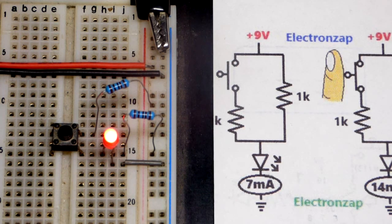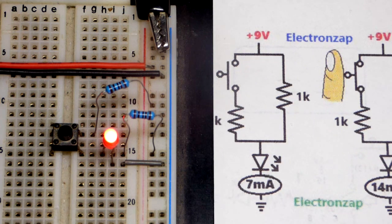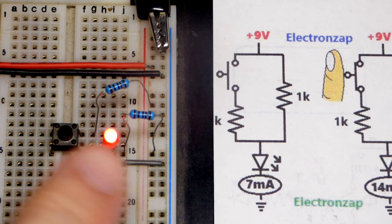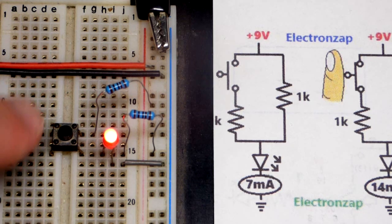In this video we have an LED that's being powered with about 7 milliamps of current flowing through it, through the resistor and LED. The switch is open right now, it's off, so it's not contributing at all.